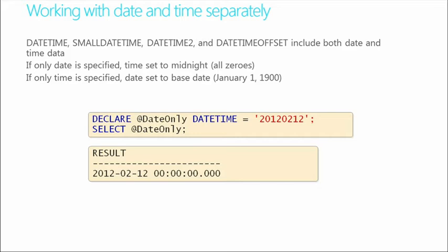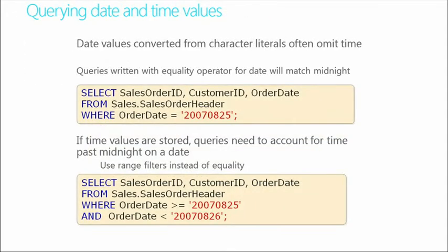When working with Date and Time separately: declaring a Date-only variable returns just the date with zeros for the time (midnight). Declaring a Time-only variable sets the date to January 1, 1900. Be aware of these return behaviors depending on what you're trying to do. Also, DateTime starts at 1753 — when the British Empire switched from the Julian to the Gregorian calendar.